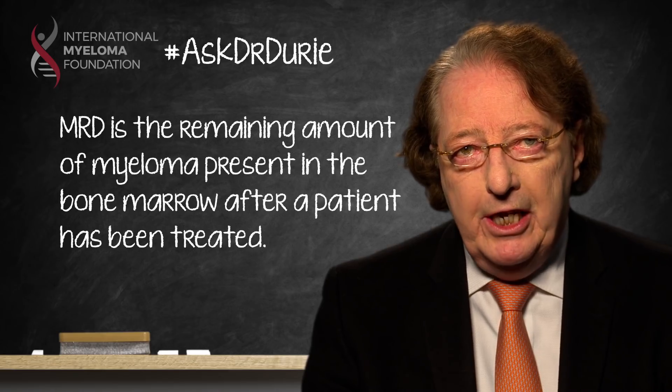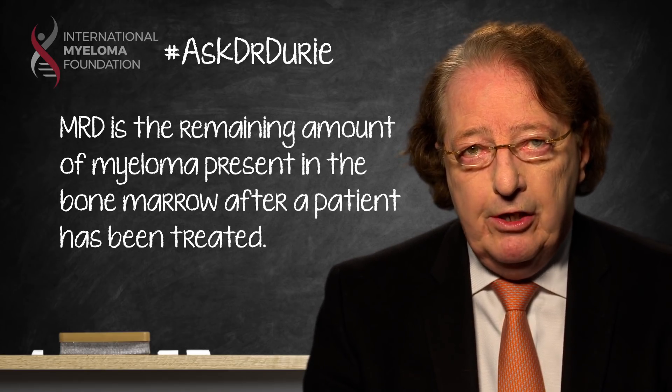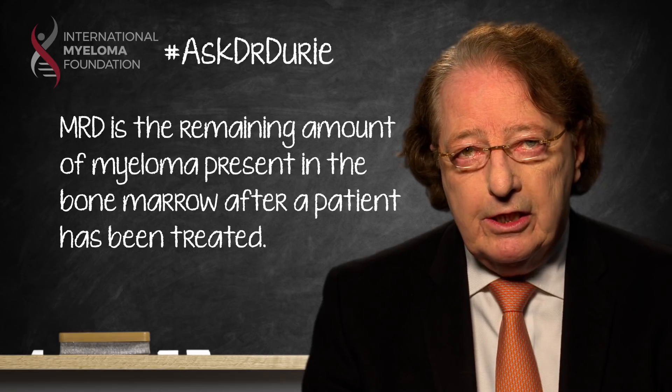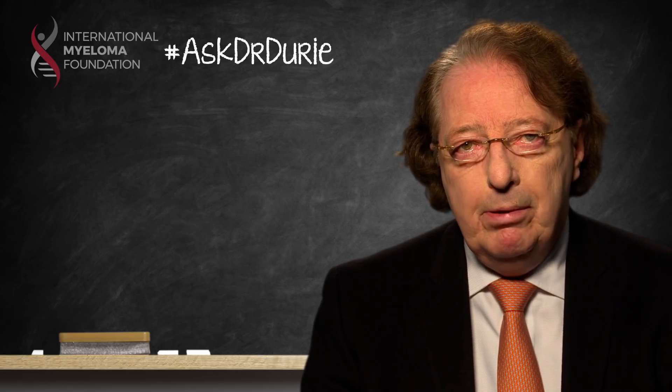For example, after a patient has had frontline therapy with VRD and then an autologous stem cell transplant, a bone marrow is done to assess the level of disease. In the past, what we would say is that there is zero percent myeloma — zero myeloma cells out of a hundred — and this is something that we have called complete remission.